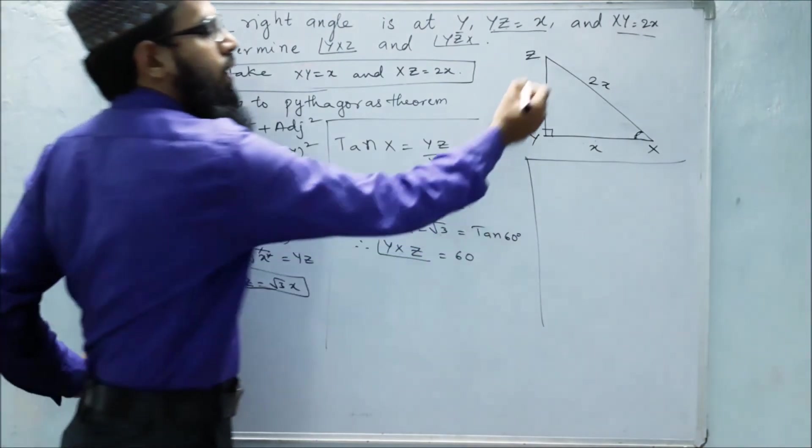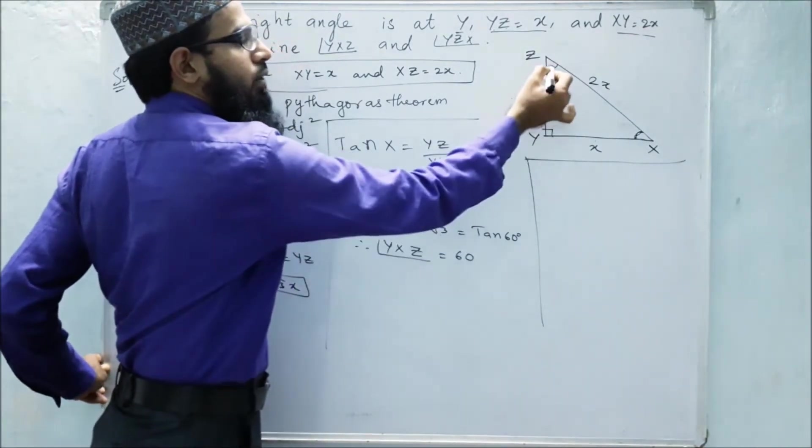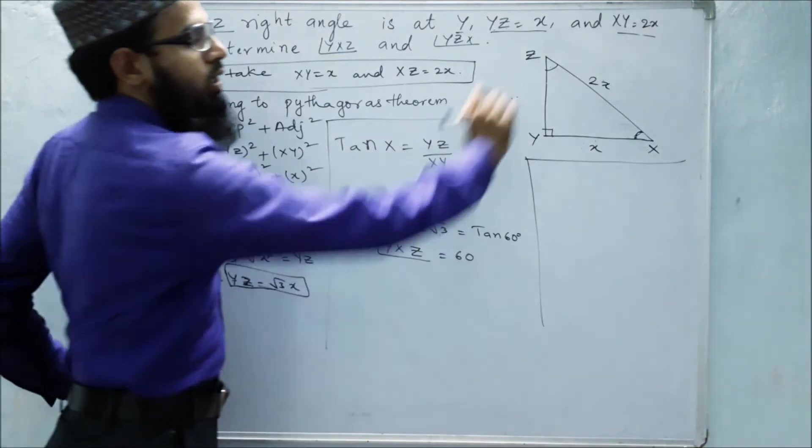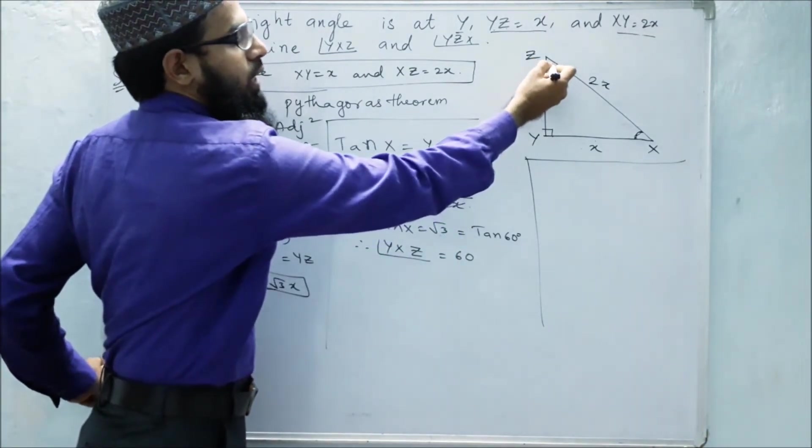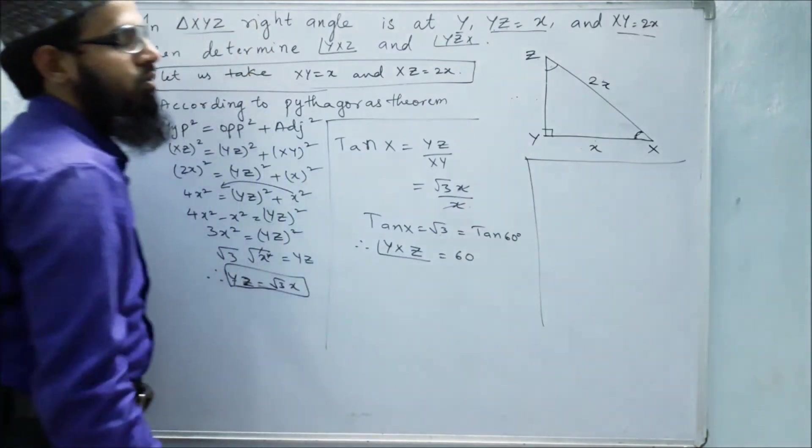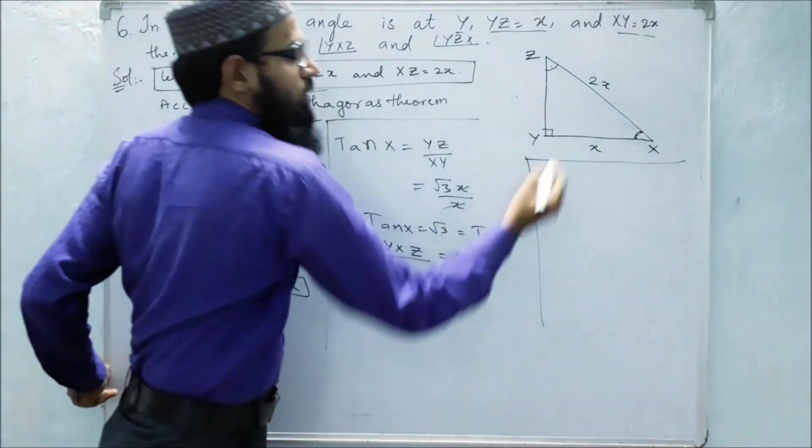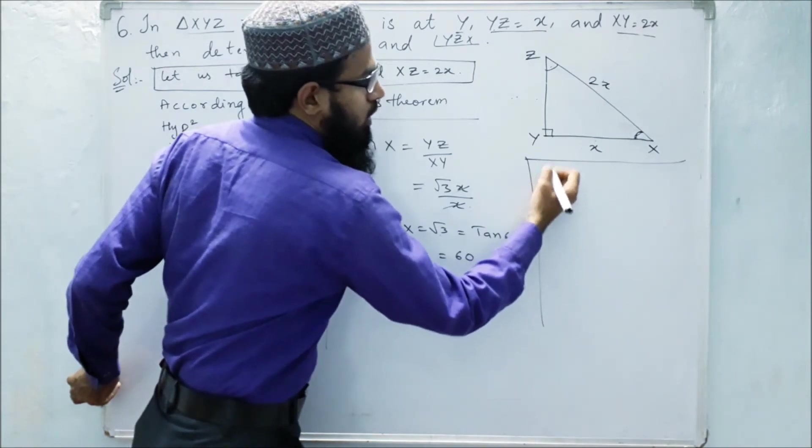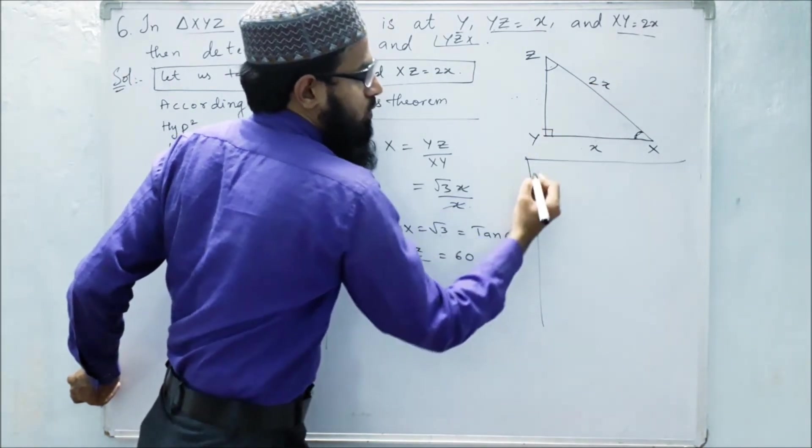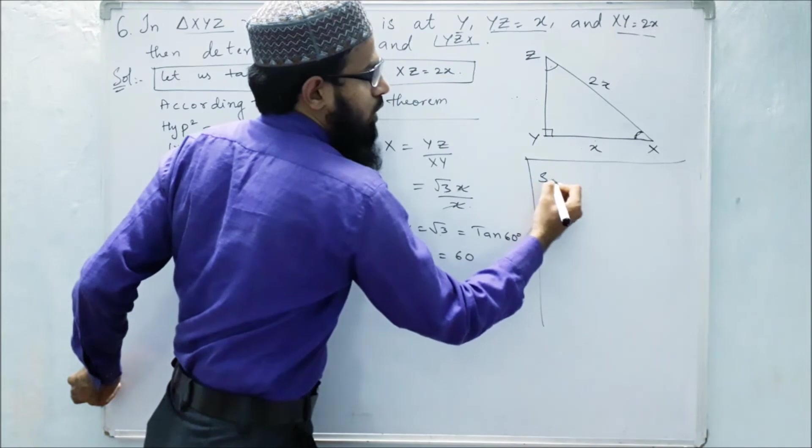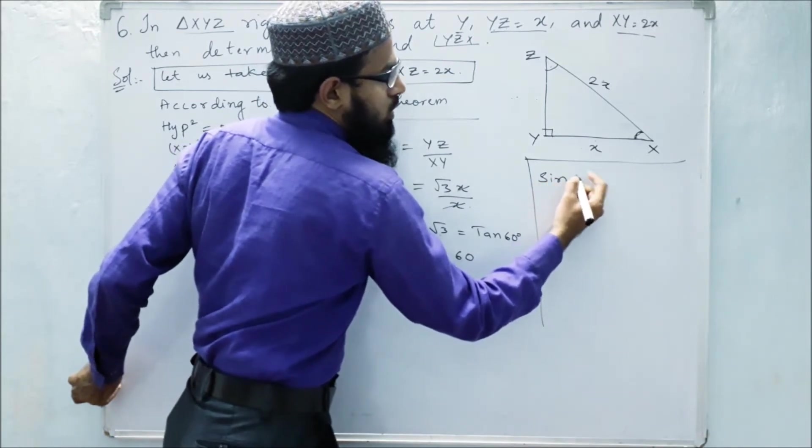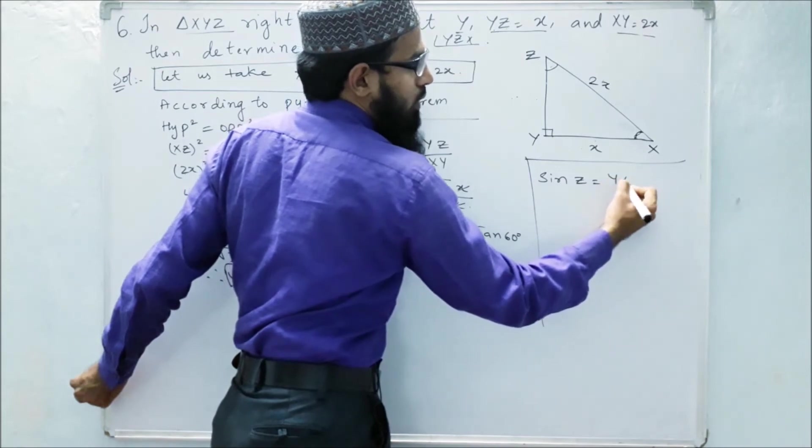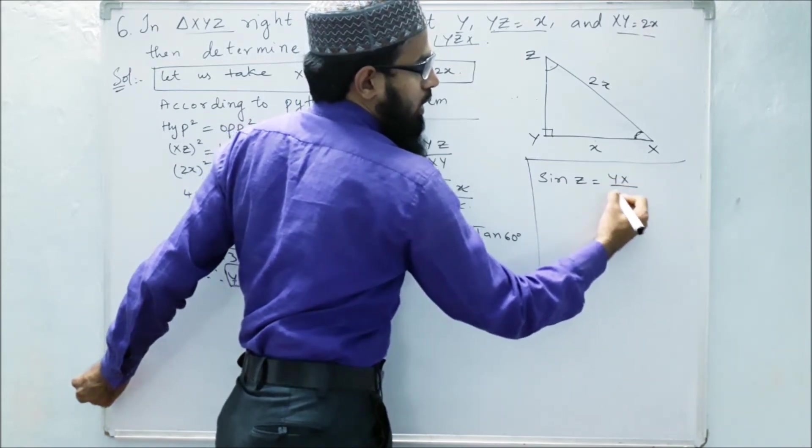For finding this angle, we can take opposite by adjacent, or else we can take adjacent by hypotenuse, or else opposite by hypotenuse. We can take any in any situation. So let us take this one, opposite by hypotenuse. So where do we get that? Sin Z equals opposite is YX by XZ.